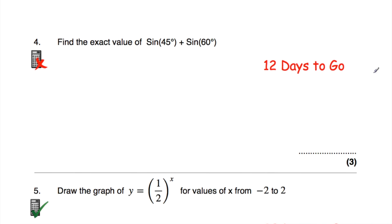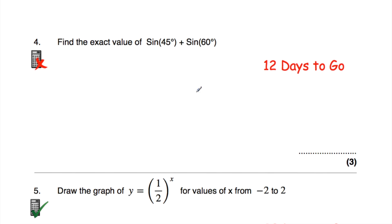Question number four is on exact trig values — we covered this 12 days ago. We've been asked to work out the exact value of sine 45 plus sine 60. Write down what sine 45 is and what sine 60 is using your exact trig values — check your revision card if needed. Then add them together, which may require a bit of addition with surds.